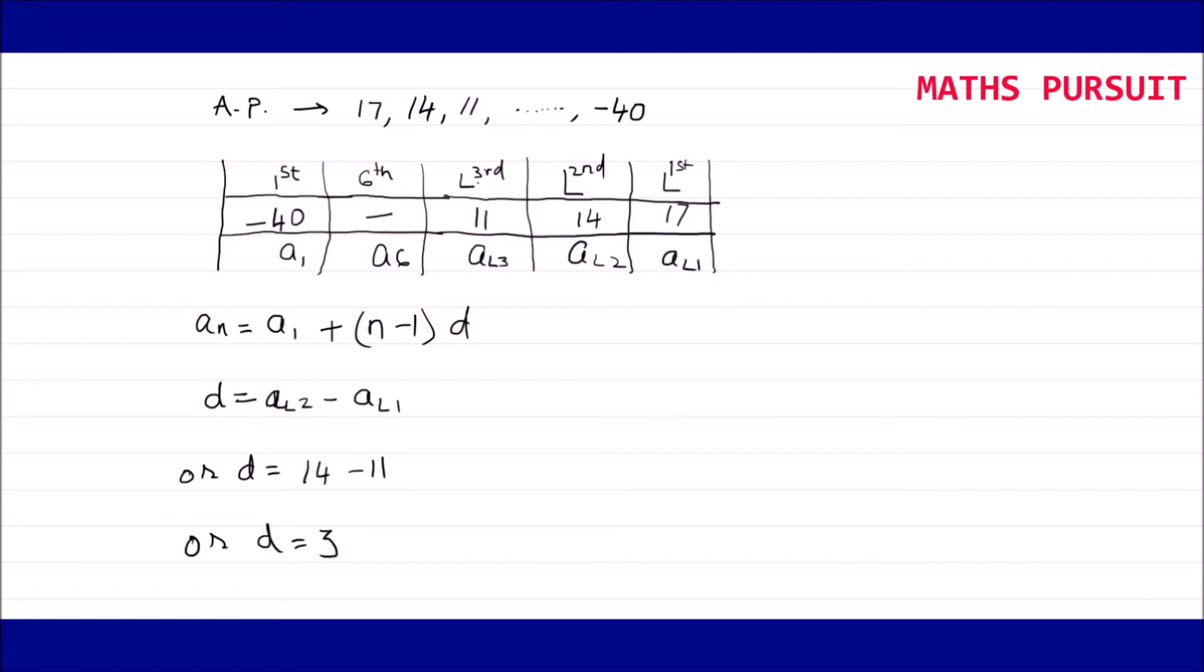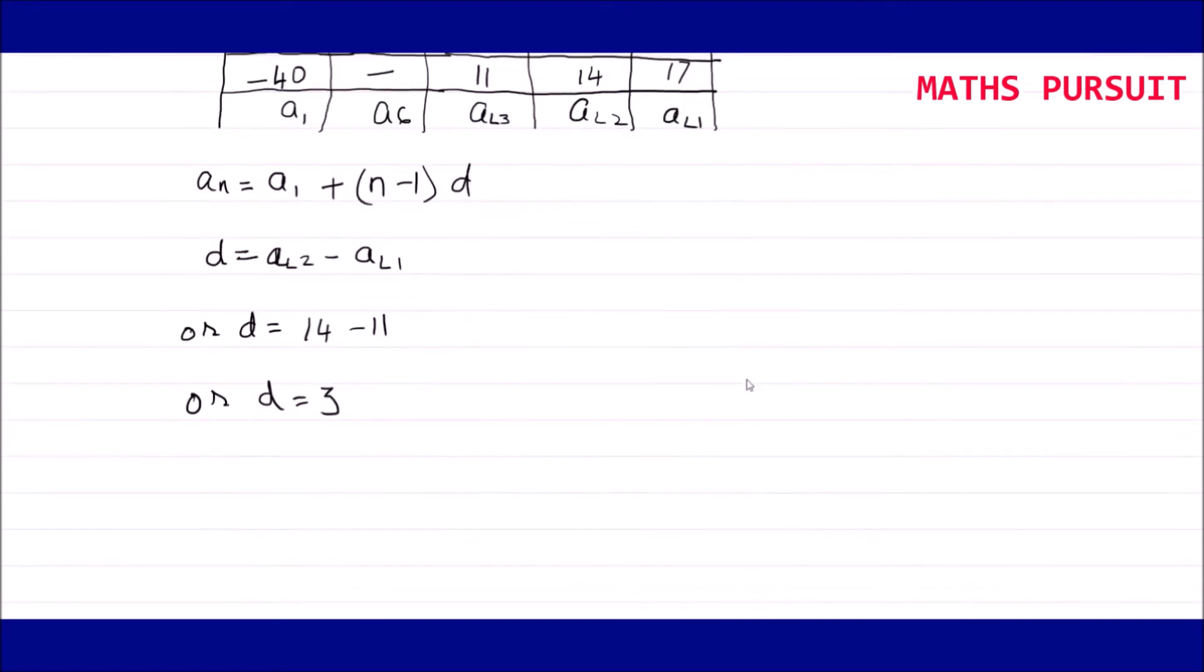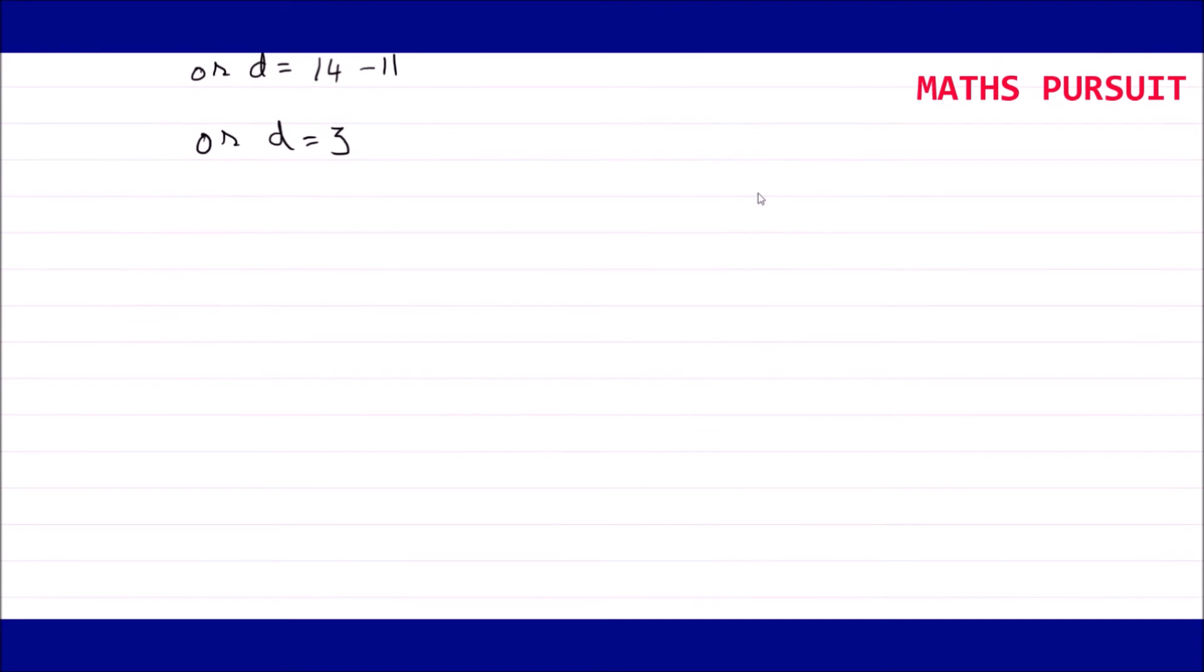You could see that I got the value of common difference is 3. Now after getting the value of common difference, it becomes very easy for us to find out what exactly we need to do. Now let me put the things in our given arithmetic progression formula. Here we are trying to find out the value for sixth term. That means our N is equal to 6.